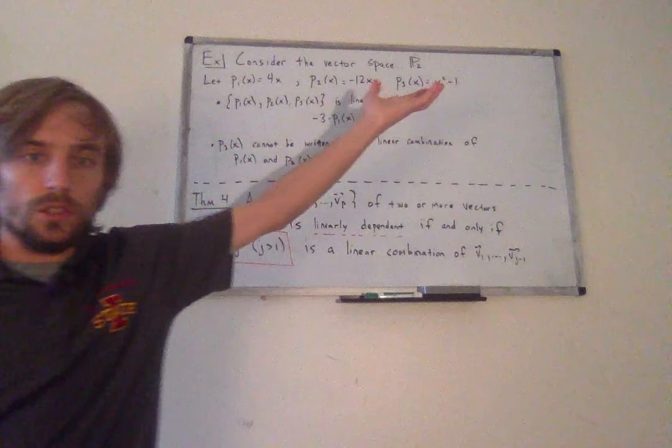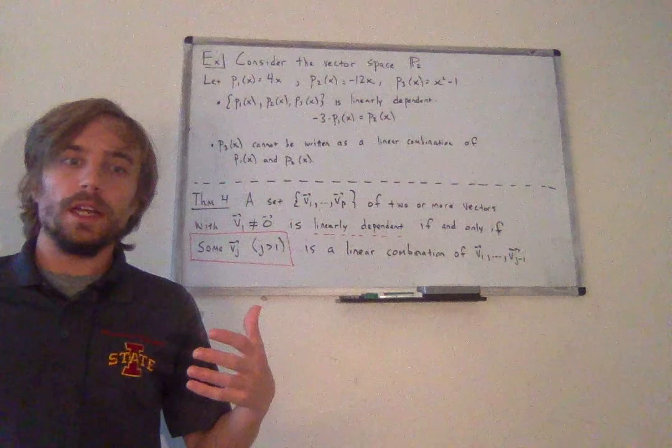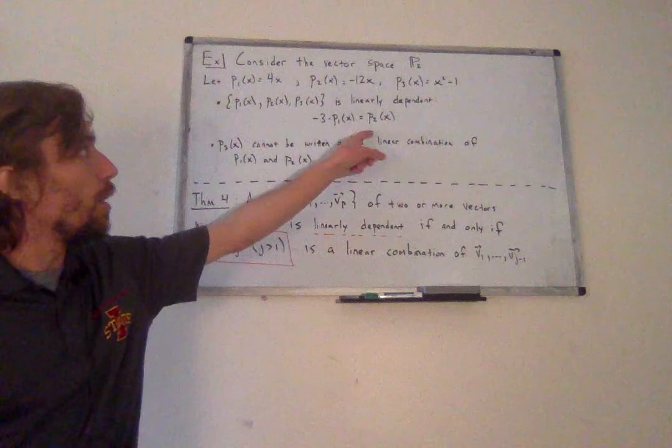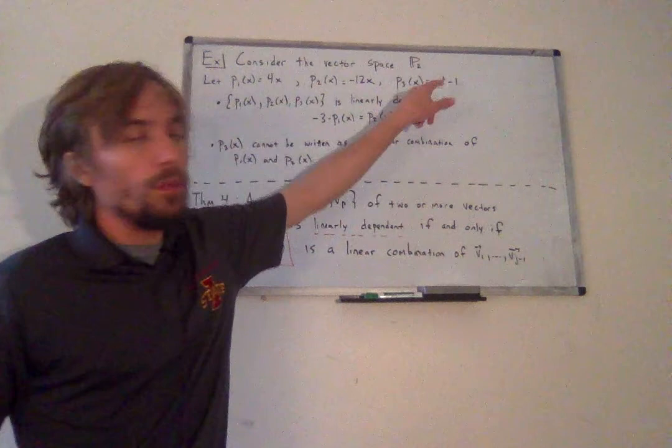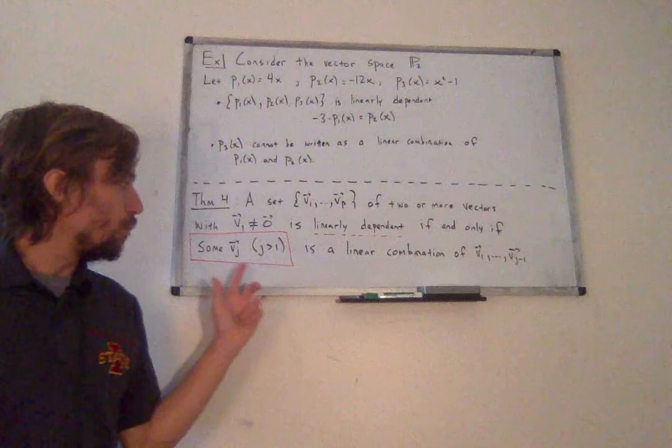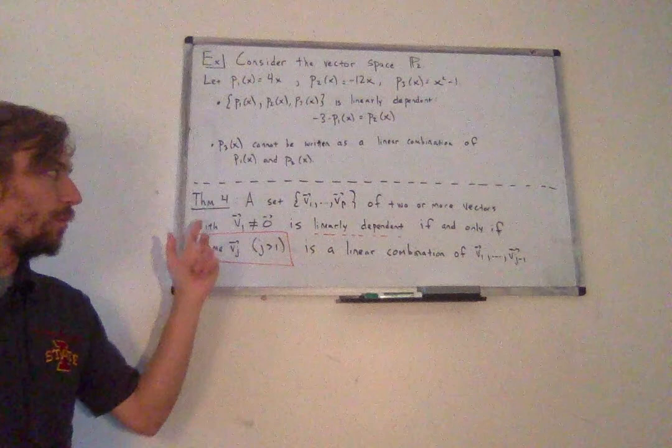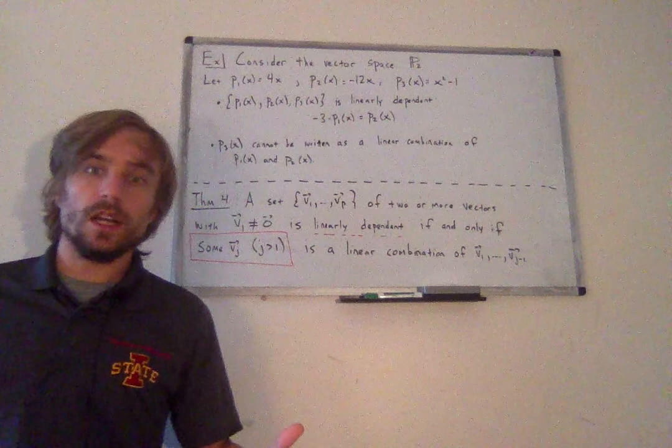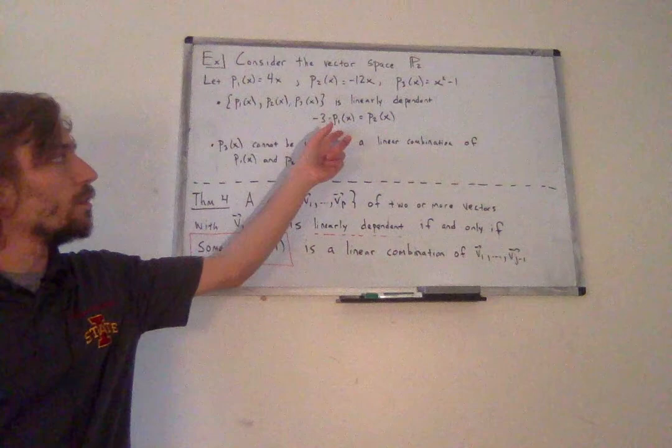The reason p3 cannot be written as a linear combination of p1 and p2 is that p3 has an x² term. Linear combinations only allow multiplication by scalars, so you can't increase the degree of a polynomial that way. Two degree-one polynomials will never be enough to get a degree-two polynomial. This is the important distinction: not every polynomial in a dependent set is a linear combination of the others — just some subset gives the linear dependence relation.